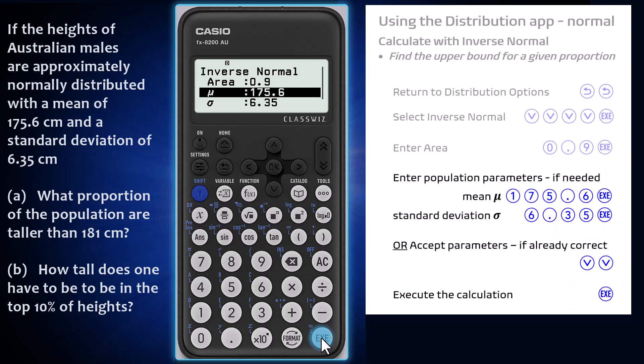Second, enter the population parameters as required. As I have just done a calculation involving the same values for mu and sigma, they are conveniently stored. If the stored values did not relate to the distribution I was working with, I would enter new ones by overtyping. As they are correct, then arrowing down to execute is all that is required.